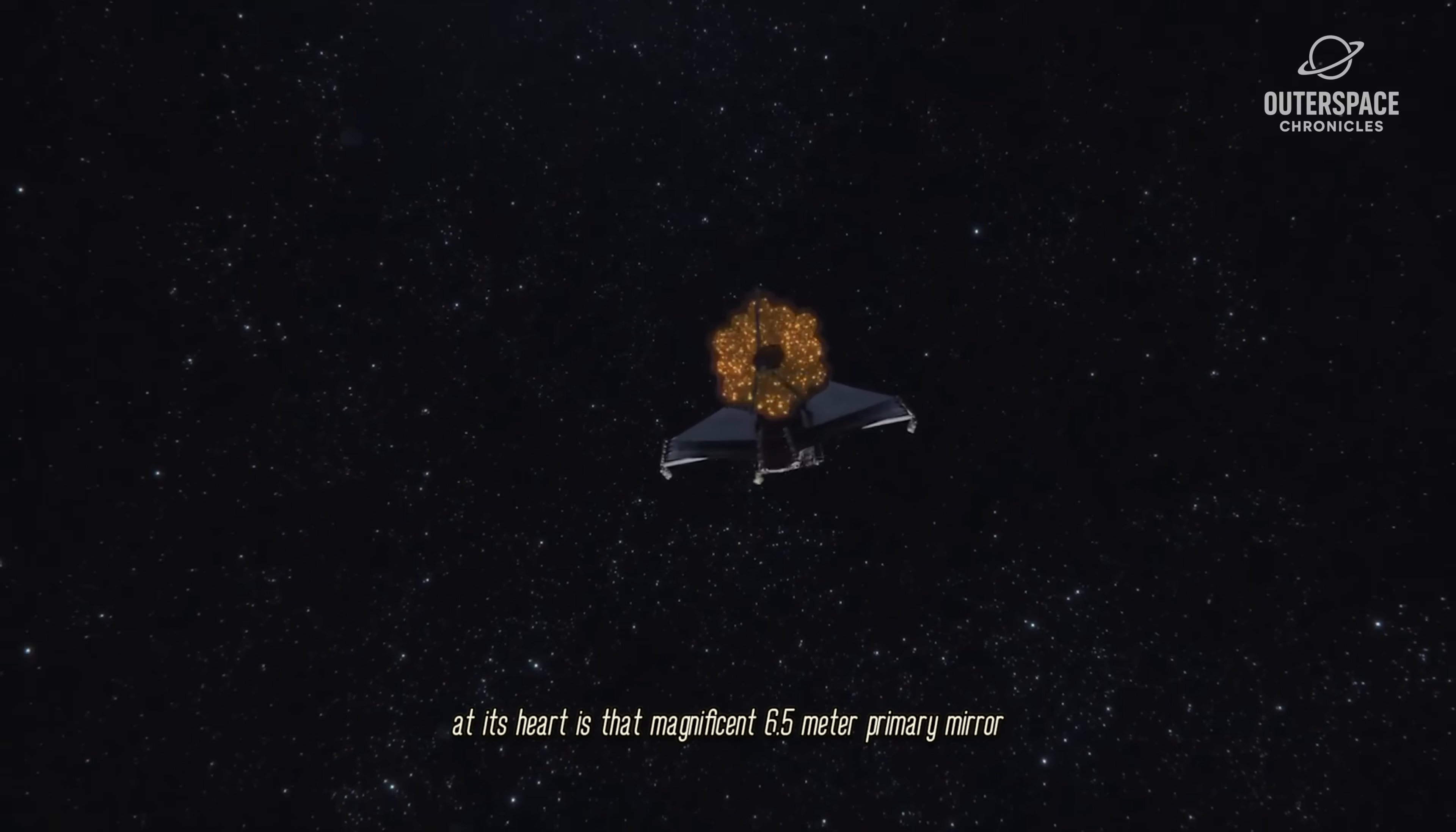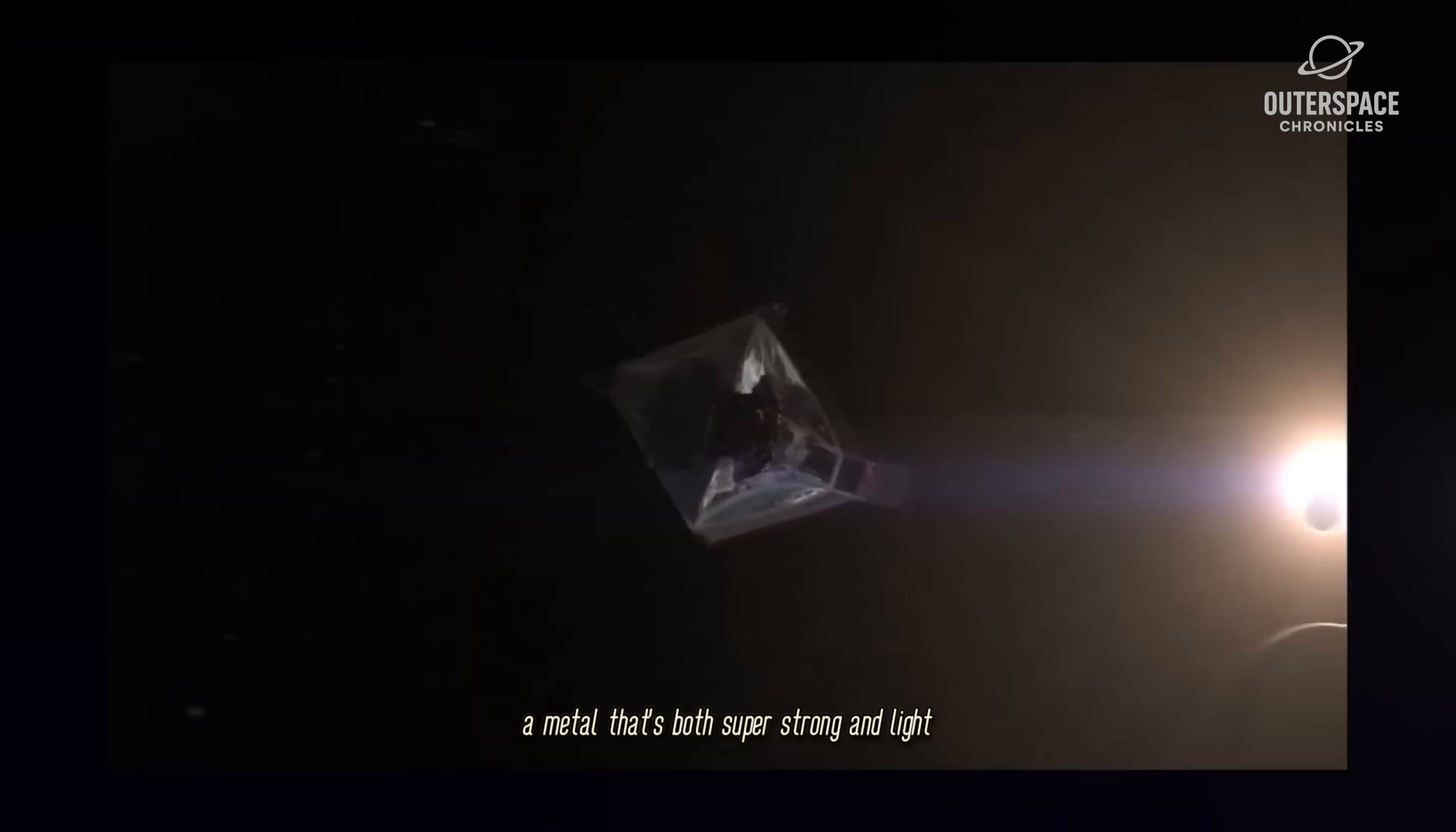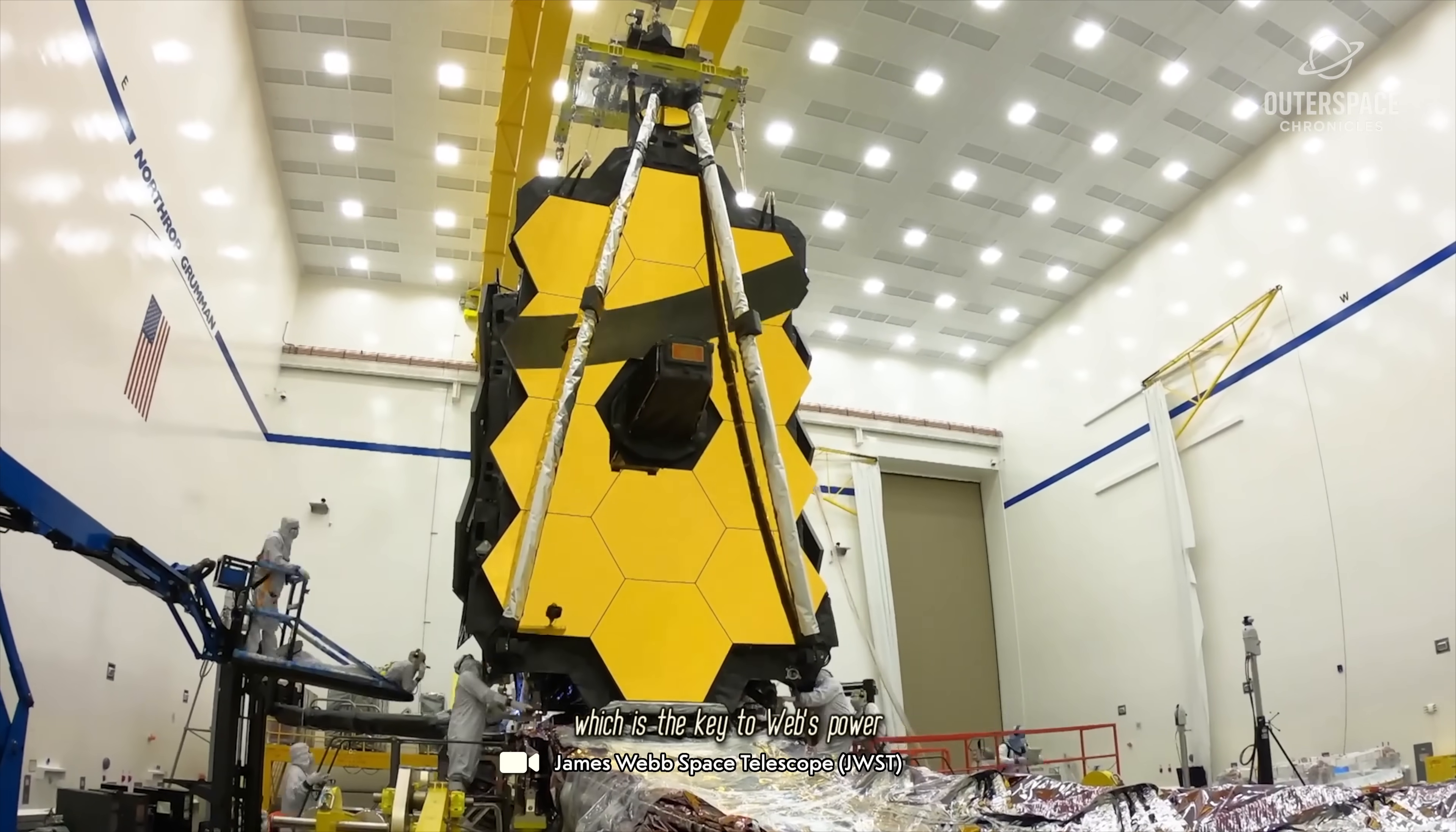At its heart is that magnificent 6.5 meter primary mirror. It's the largest ever sent to space, made of 18 hexagonal segments of beryllium, a metal that's both super strong and light. Each one is coated in a microscopically thin layer of pure gold. Why gold? Because it is exceptionally good at reflecting infrared light, which is the key to Webb's power.